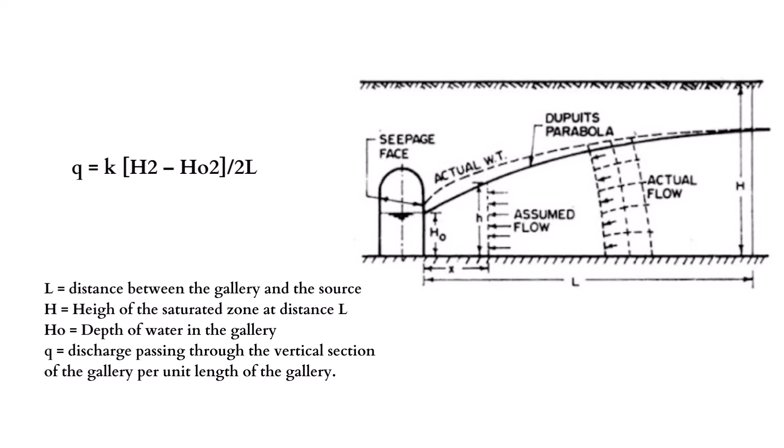If water enters from one side of the gallery, the discharge is q. If water enters from both sides, the yield will be 2 times q.